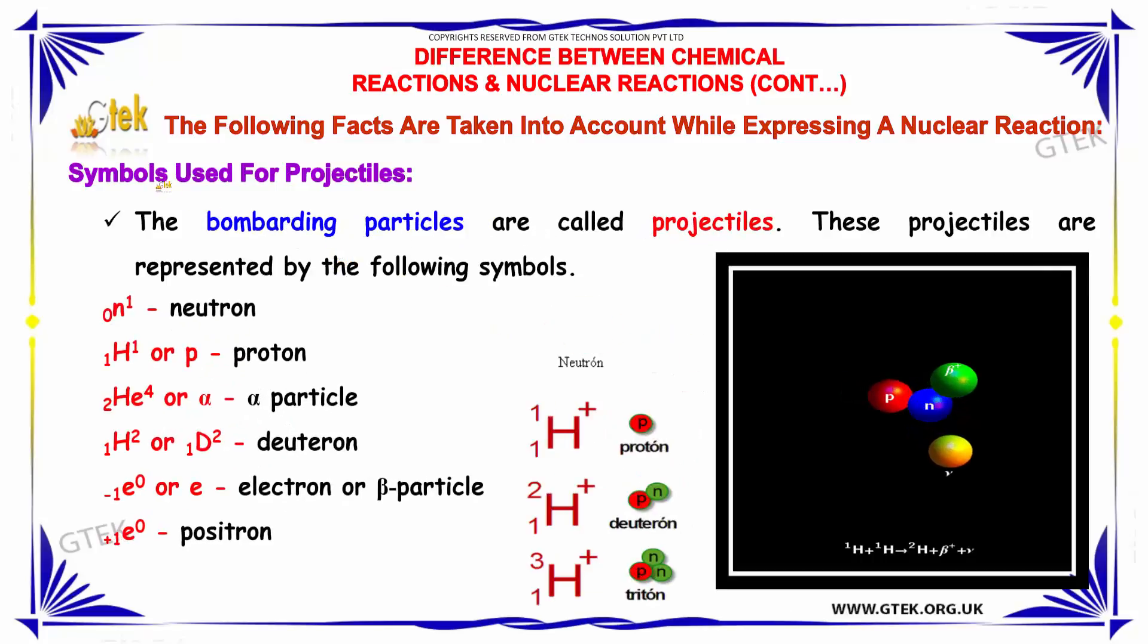The symbols used for projectiles. The bombarding particles are called projectiles. These projectiles are represented by the following symbols. You are able to see the projectiles here. Neutron, this is the symbol for neutron. This is a proton or hydrogen. It's helium or alpha. Deuteron or deuterium. Or electron or beta particle. And this one is positron. These are all considered as projectiles.